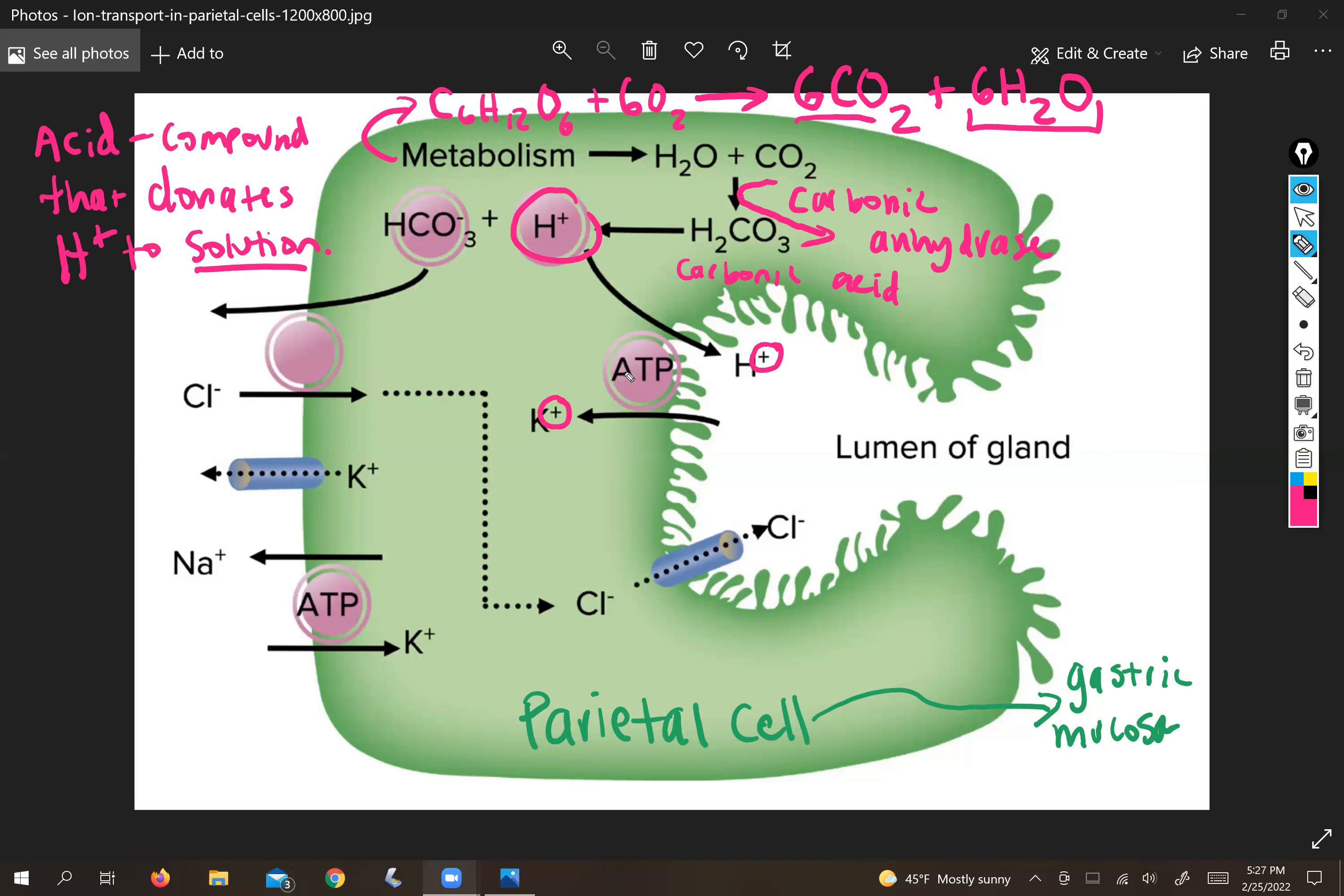But in this case, this transport is active and it requires ATP. So you actually have to spend an ATP to do this. So part of the initial cost of creating digestive juices to digest food that you're going to use to make ATP is you have to spend a little bit of ATP to even get that process rolling.